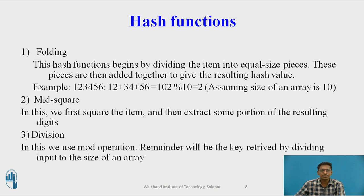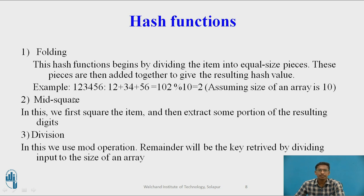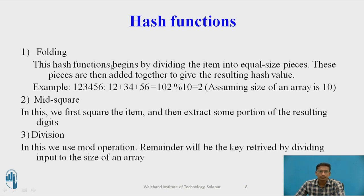Now these are the different hash functions used for hashing. In general, there are three hash functions used for finding out the hash key from a given input value. The first one is folding. Inside folding, it begins by dividing an item into equal-size pieces. These pieces are then added together to give a resulting hash value.